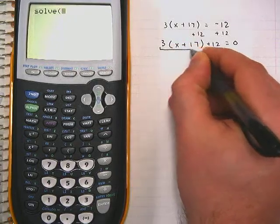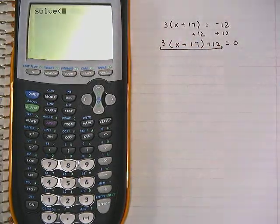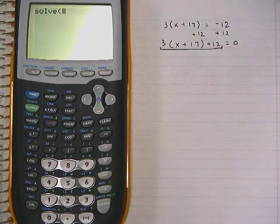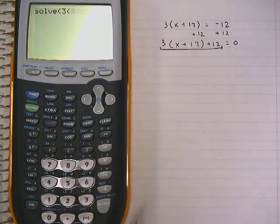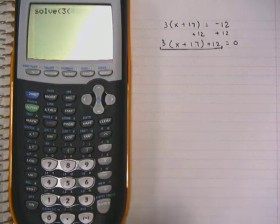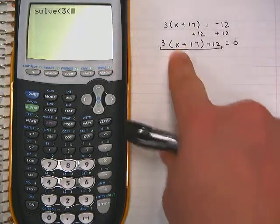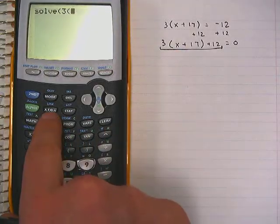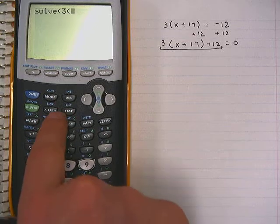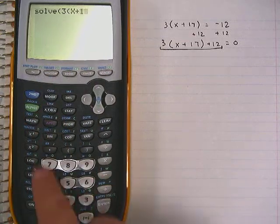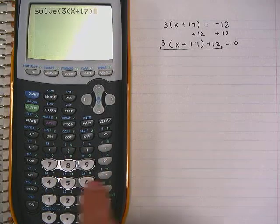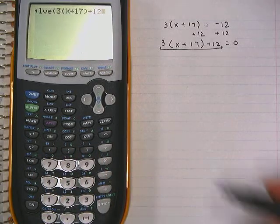Once we've done that, we're going to enter this side of our equation, the expression that we created, into the solver command. So three times, we open the parentheses. In order to use the variable, we're going to hit this X, T, O, N button. Those aren't actually O, but that doesn't matter. Hit X, we're going to add 17, close the parentheses, and then add 12.